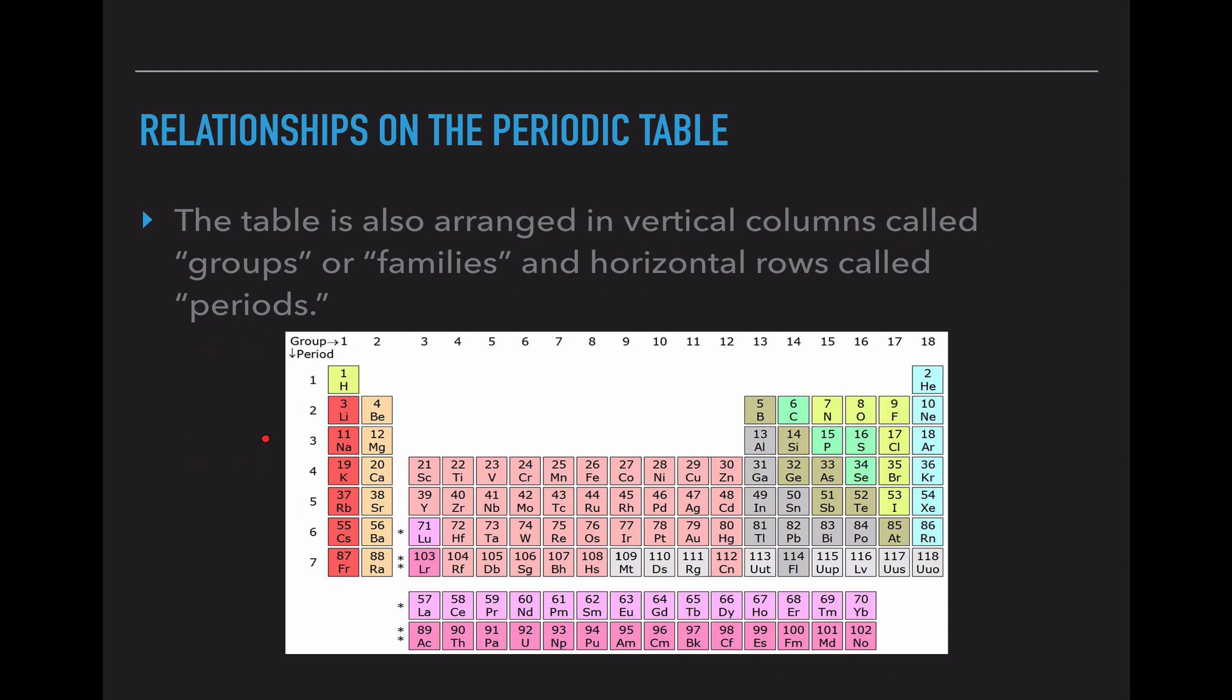We also have horizontal rows called periods. The first row only holds two elements. The second row holds eight. The third row, the fourth row, etc. Now, the transition metal section, as well as the section at the bottom with the lanthanides and actinides, those follow slightly different rules because even though scandium has begun in the fourth row, this is actually the third row in terms of our electron usage, so it gets kind of confusing.